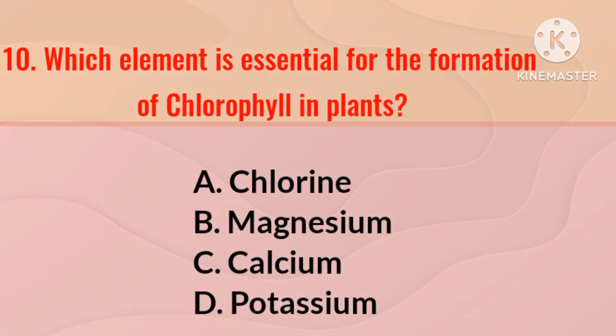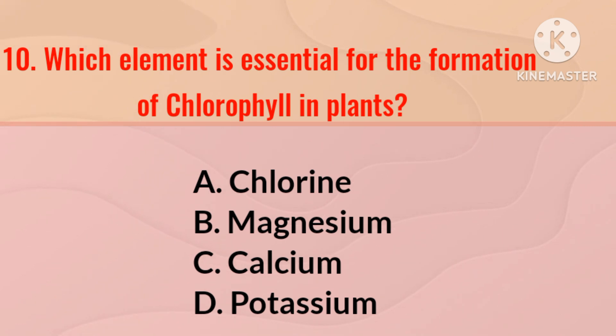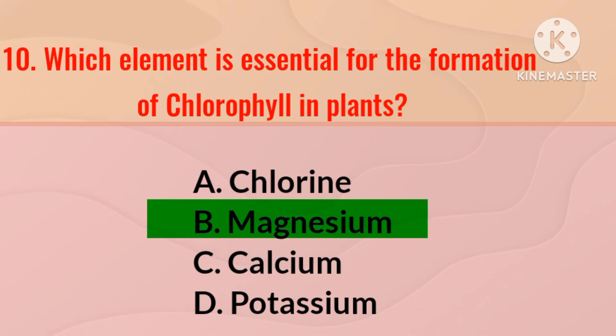Which element is used in nuclear reactors as fuel? The right answer is uranium. Which element is essential for the formation of chlorophyll in plants? The right answer is magnesium.